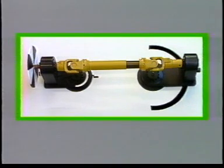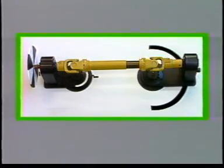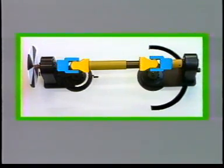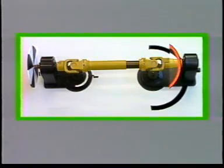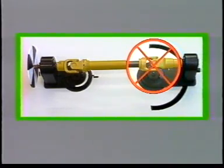The prerequisite for uniform rotary motion with a PTO driveshaft is that both outer yokes and both inner yokes are in one plane. With Walterscheid telescoping profiles, this prerequisite is always fulfilled. Any other arrangement of the joints in relation to one another is wrong and leads to non-uniform rotary motion at working angles.